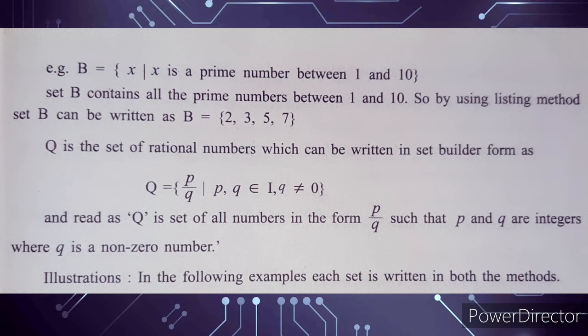One more example: Set B is the set of all x such that x is a prime number between 1 and 10. Using the listing method, the answer is B = {2, 3, 5, 7}. These are the prime numbers between 1 and 10.